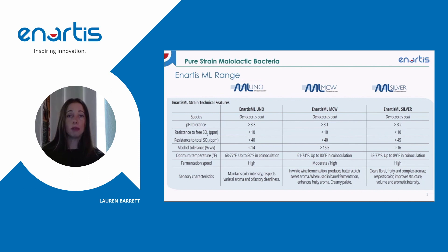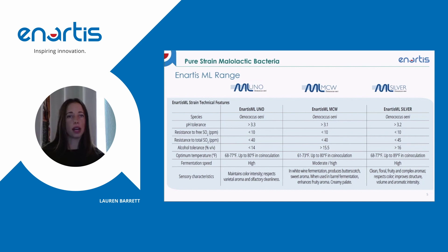Ennartis ML MCW contributes notes of cream and butter, as it has been selected specifically for its diacetyl production. It performs fast malolactic fermentation in wines with high alcohol content and low pH conditions, and is suitable for reds, whites, and sparkling wines. Last but not least, we have ML Silver, which is well-suited for high alcohol and high polyphenol content wines. It can also thrive with lower pH and elevated levels of total sulfur dioxide. It works well in both red and white wines and produces wines with clean, floral, fruity, and complex aromas.